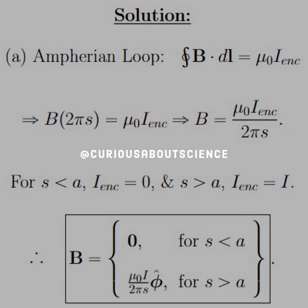we can now find the enclosed current for each of these scenarios. So for S less than A, the current enclosed is 0 because we're inside the wire and they said that all the current was moving on the outside of the wire. So if we go slightly larger and make the loop outside of the wire, then the current enclosed is just the current that we measure. So that's just equal to I.